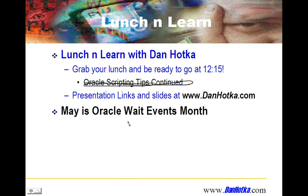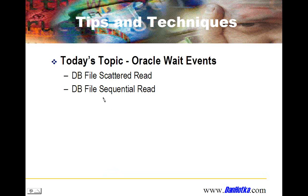This is wait events month, and you'll get another announcement tomorrow because I'm busy next week. That brings us up to Memorial weekend, so we'll start these back up in June. This is wait events month, and June will be wait events month too. Today I'm going to talk about two wait events: DB file scattered read and DB file sequential read — these are the two big IO producers. When you've got slow running SQL, you usually have one of these or the other.